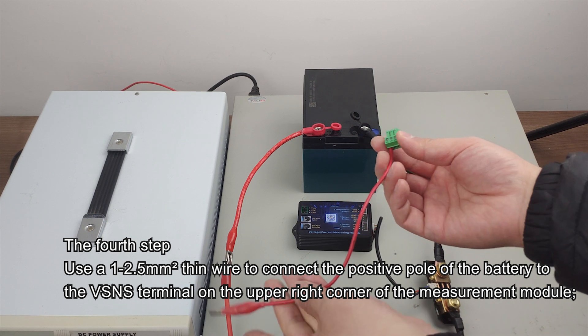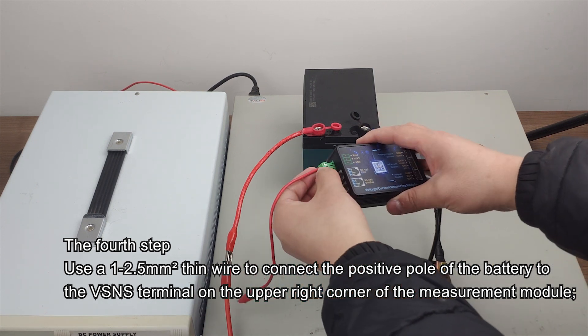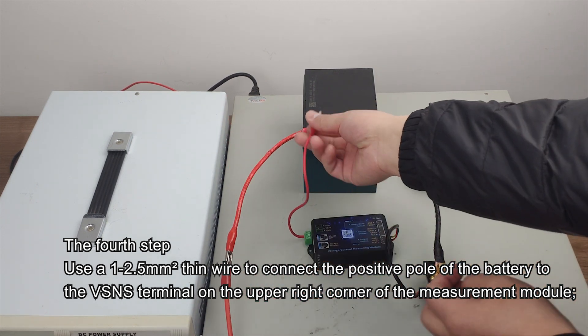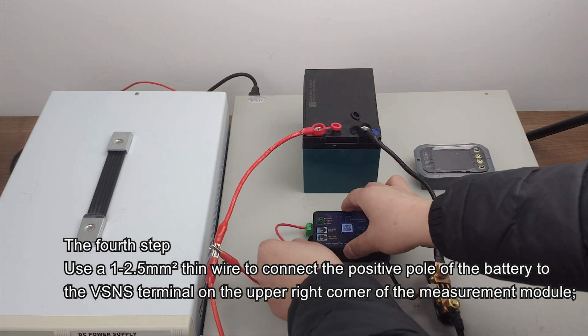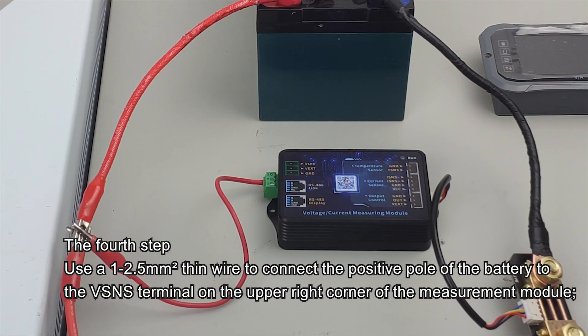The fourth step. Use a 1 to 2.5 mm thin wire to connect the positive pole of the battery to the VSNS terminal on the upper right corner of the measurement module.